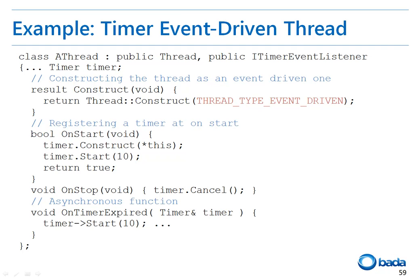In the onStop function, the code to stop and delete the timer has been implemented. In the onTimerExpired function, the operation to be performed periodically is implemented. And the start function of the timer is called again so that the onTimerExpired function is called repeatedly. Since this class is an event-driven thread, the run function is not implemented.